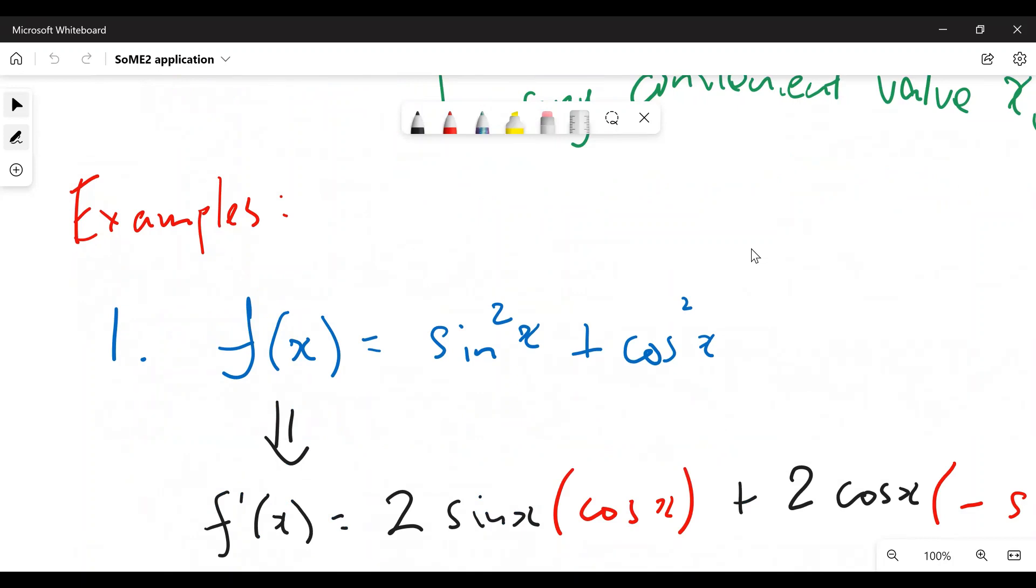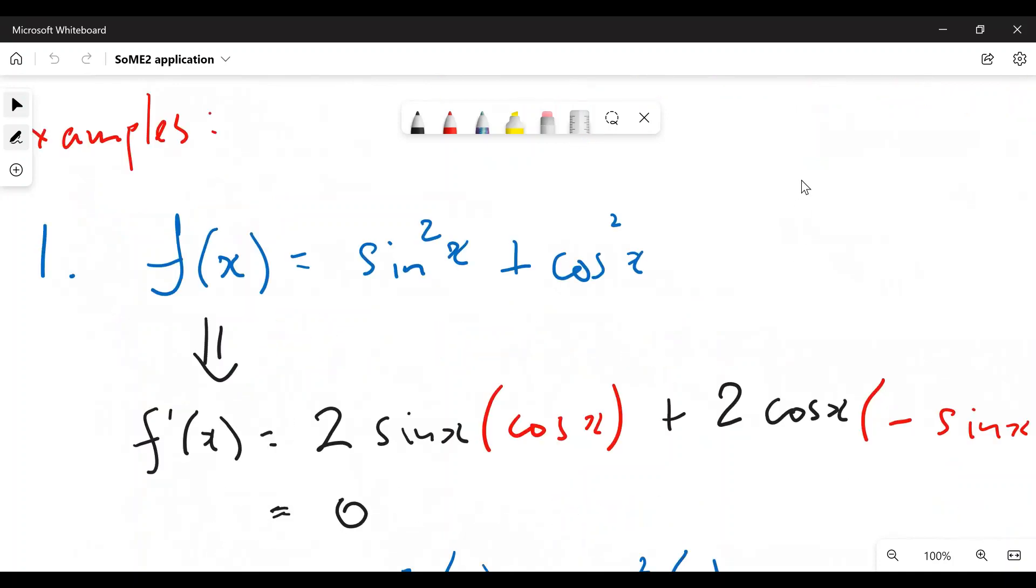Okay, the classic sine squared x plus cosine squared x. That's obviously one. You can try and prove this using a unit circle, but I'm going to show you this method. Let's take the derivative.